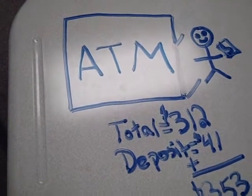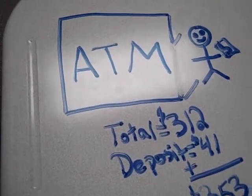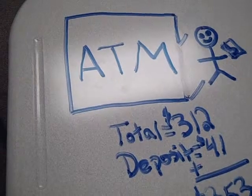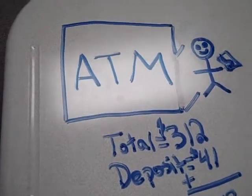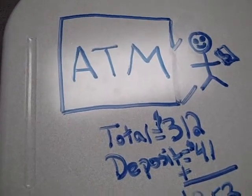Last week Jordan's savings account had a balance of $312. He deposited $41 from his paper route but withdrew $15 to buy a new CD. What is Jordan's new balance in his savings account?